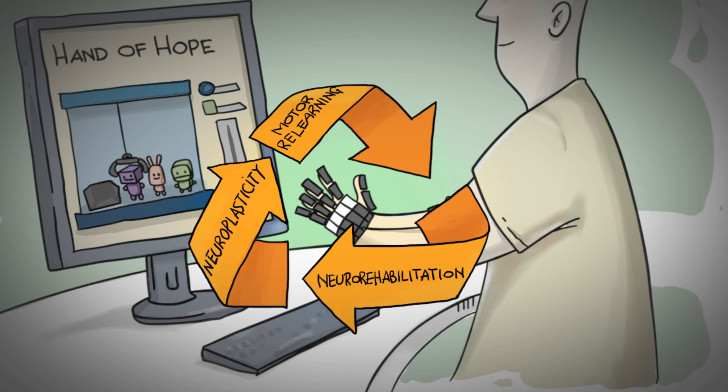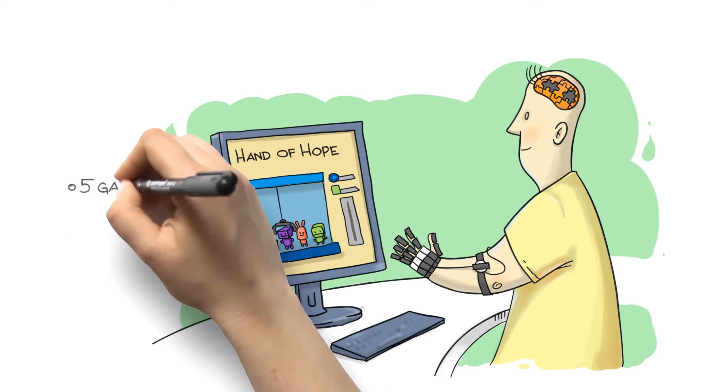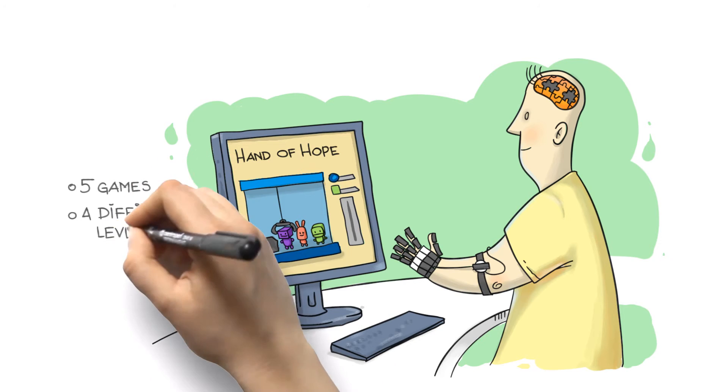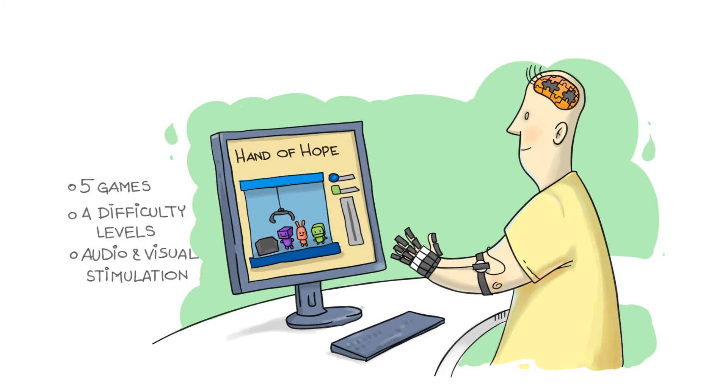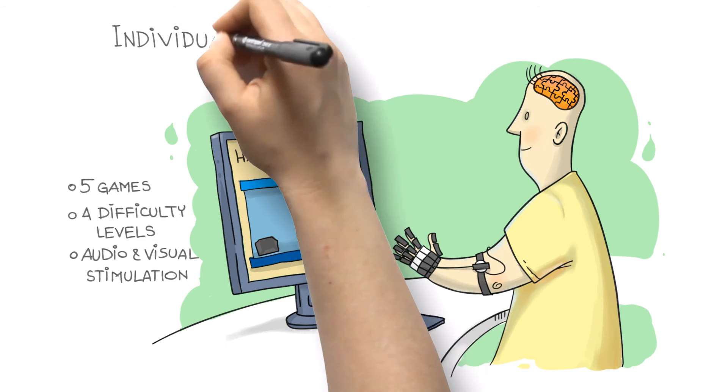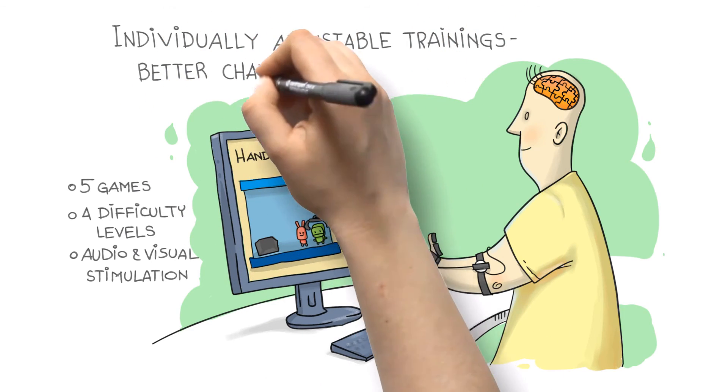The Hand of Hope system is a comprehensive stroke rehabilitation mechanism. The system offers five different games with four difficulty levels, as well as audio and visual stimulation. The device can be moved by the will of a user to complete tasks. Users need to actively use their brain, thus training it and relearning motor skills. As both the intensity and duration of trainings are adjustable to the individual patient level, the Hand of Hope enhances patients' capacity for recovery.